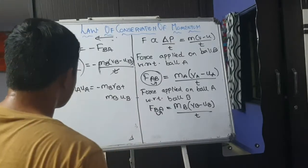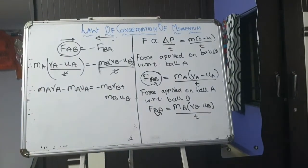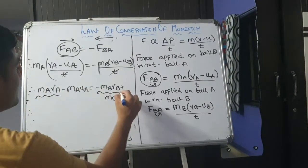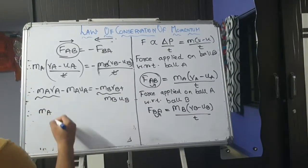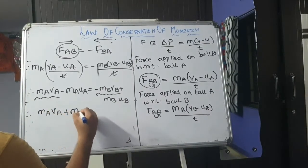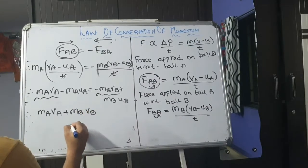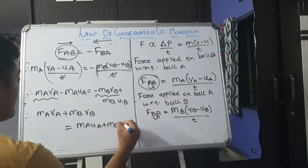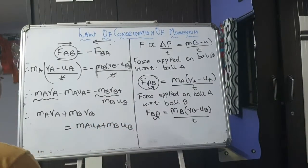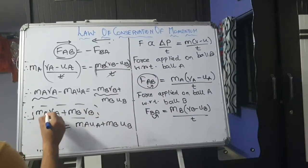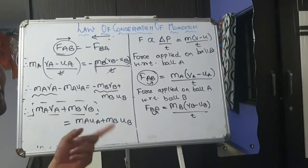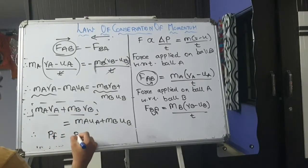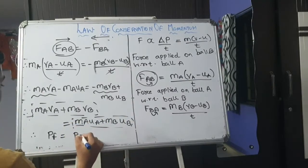Now, in the next step, I will rearrange final velocity together. These are the final velocities terms. So, mA VA plus mB VB. It is nothing but equal to mA uA plus mB uB. So what does it give us? What is this momentum? As you all know the momentum formula is M into V. So this is your final momentum. That is nothing but equal to your initial momentum, that is Pi.